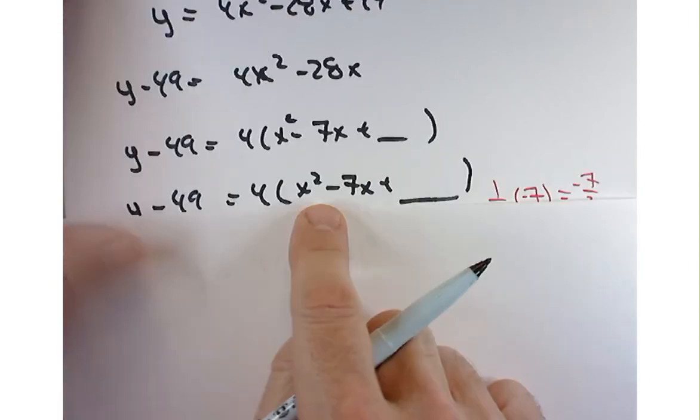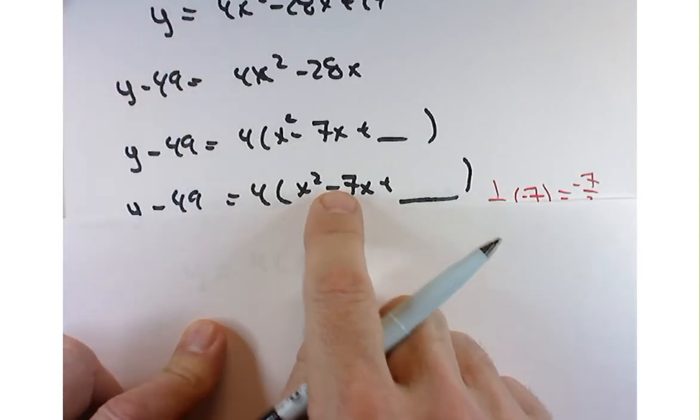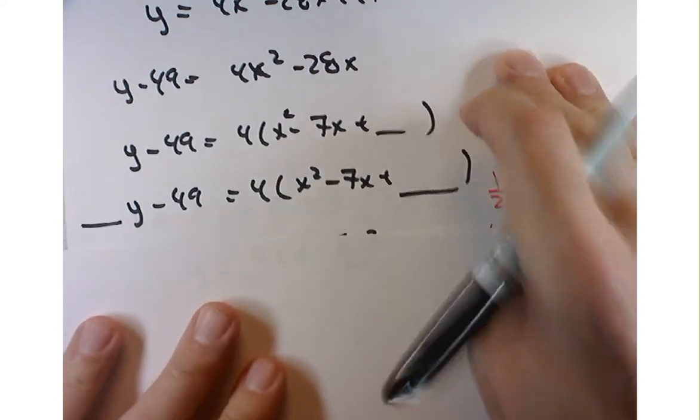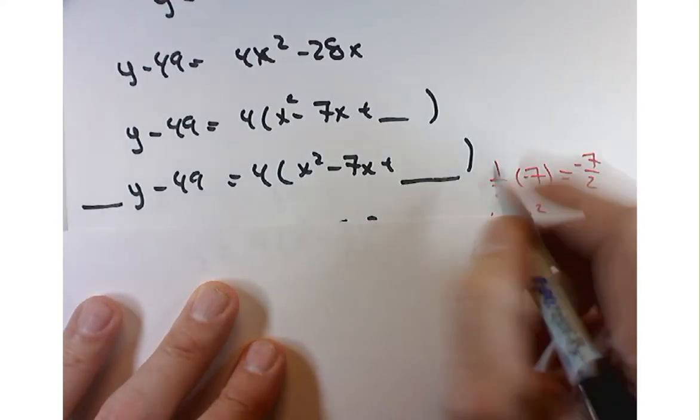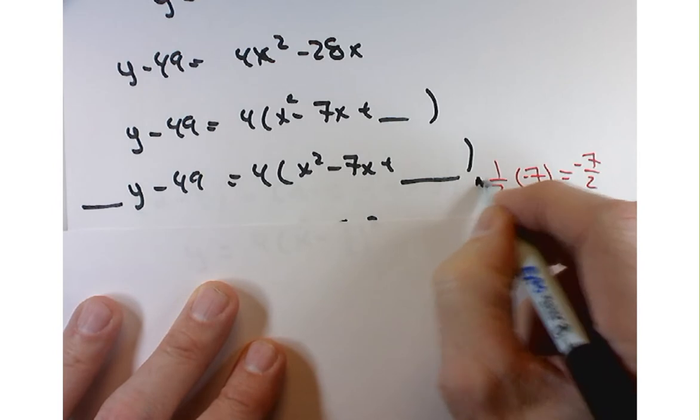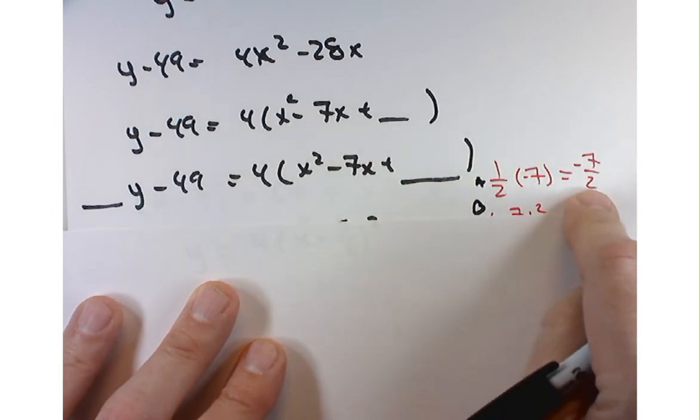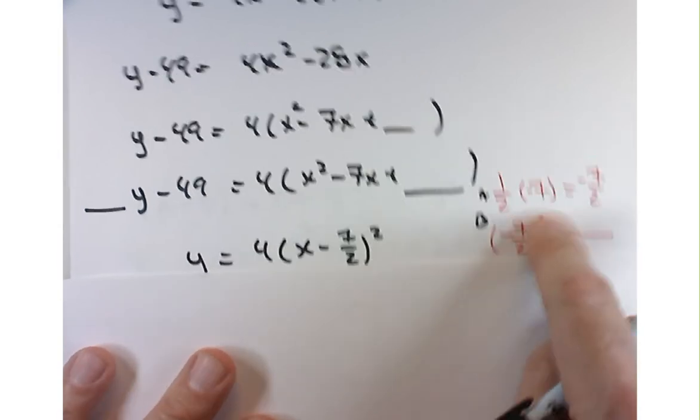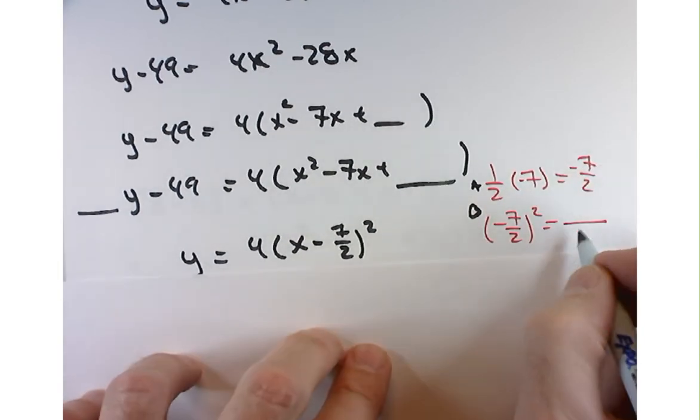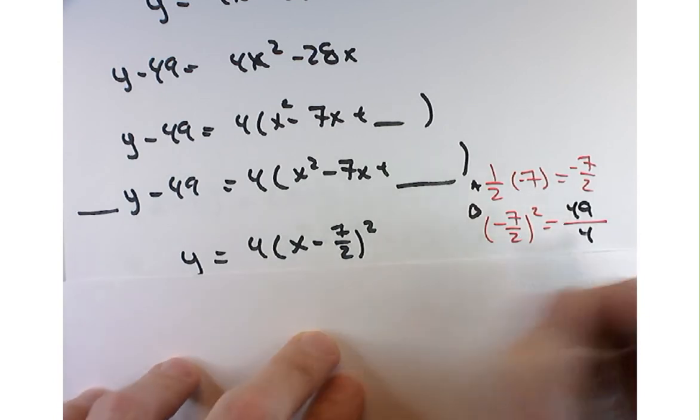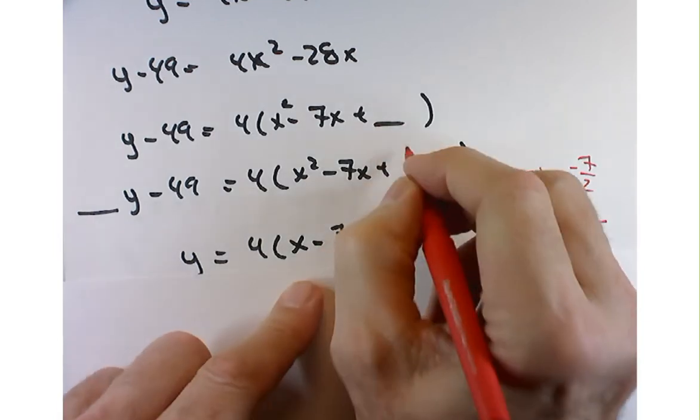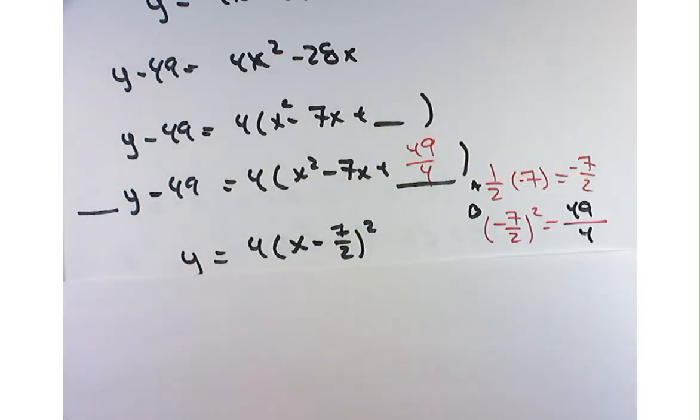Now, to complete the square, you take half of this middle number. So that's half of negative 7. That gives you negative 7 over 2. That's kind of like the first step. The second step is to do what with this number? Square it. And when I square it, I square the numerator and I square the denominator. I'll do the denominator. You do the numerator. What do I get here? 49. Good. So I'm going to put 49 over 4 in here.